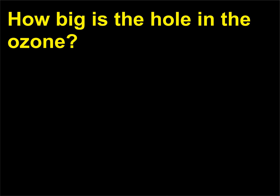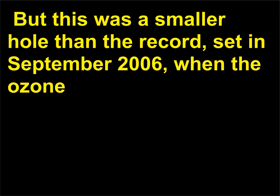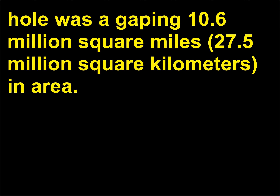How big is the hole in the ozone? In 2007, the ozone hole was measured to be 9.3 million square miles (24 million square kilometers) in size. But this was a smaller hole than the record set in September 2006, when the ozone hole was a gaping 10.6 million square miles (27.5 million square kilometers) in area.